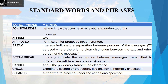Now let us look at some of the standard words and phrases used on RT in aviation. The first phrase is 'acknowledge', used when the transmitting station asks the receiving station to confirm that they have received and understood a particular message. The next phrase is 'approved', which means permission for a proposed action is granted — for example, an ATC can approve a requested engine ground run. The next phrase is 'break', used to indicate separation between two parts of a message that are not linked to each other.